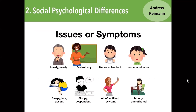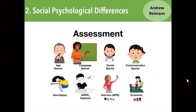When we look at students in terms of behavior problems in the classroom — for example, students who appear lonely, distant, shy, uncommunicative, sloppy, despondent, moody, or unmotivated — at first glance we can see those as behavior problems. However, with some assessment, we can see that these individual differences, which may be invisible, can be considered learning difficulties, such as an age barrier for a mature student, a language barrier for an exchange student, narcolepsy, ADHD, or dyslexia.